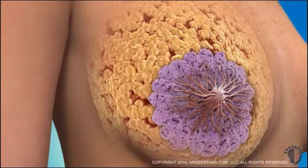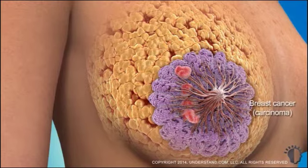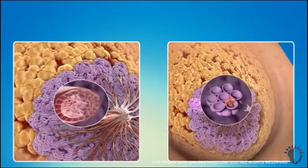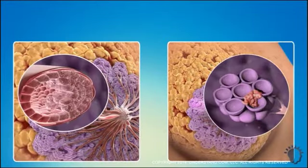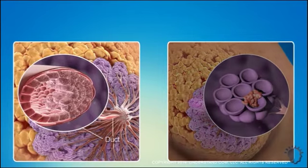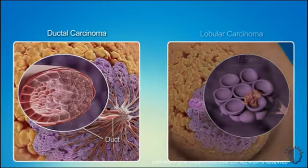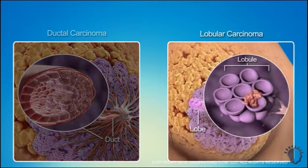Breast cancer, also known as carcinoma, is a general term for various types of malignant tumors that originate in the breast. There are two main types of breast cancer. The most common form starts in the ducts and is called ductal carcinoma. The second type is known as lobular carcinoma, since it begins in the lobules.